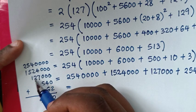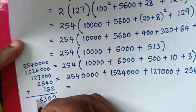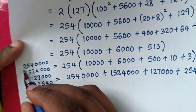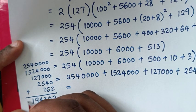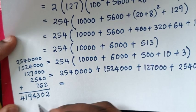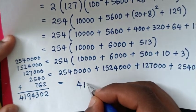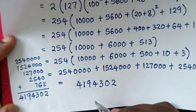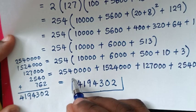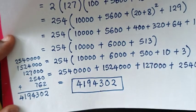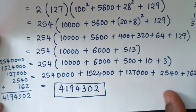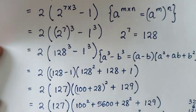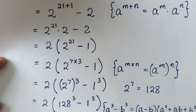4 plus 2 plus 2 is 8, plus 1 is 9. Then 10 plus 1 is 11, carry 1; 2 plus 1 is 3, plus 1 is 4. Therefore this is our final answer: 4,194,302. This is our final answer without using a calculator. Thank you, don't forget to subscribe to my channel and see you in the next video, bye bye.